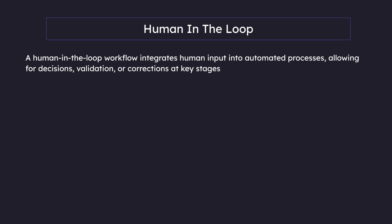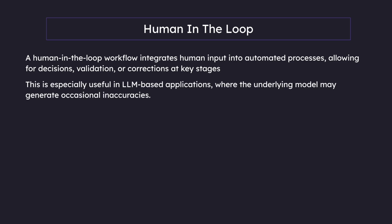A human-in-the-loop workflow integrates human input into automated processes, allowing for decisions, validation, or corrections at key stages. This can be especially useful in LLM-based applications where the underlying model may generate occasional inaccuracies.